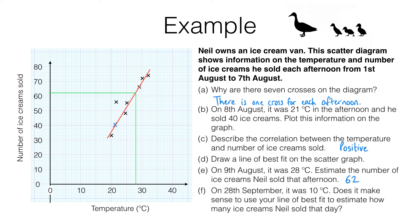In part F, we're again being asked to make an estimate for a day that has a temperature of only 10 degrees. It doesn't make sense to do this because this is well outside the range of data that we have. All of the information that we have is for days where the temperature was 20 degrees or higher. So it's not a good idea to continue the line of best fit that we have outside that range of data.